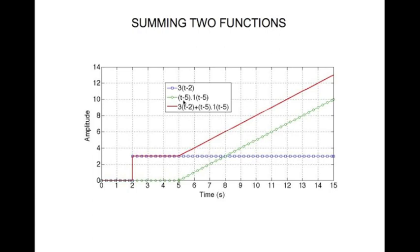You have a ramp, a unit ramp, a unit ramp that starts at t equal to 5, that's the function represented by the green circles here. And then the sum of the two functions, that's the red, that's how it looks.